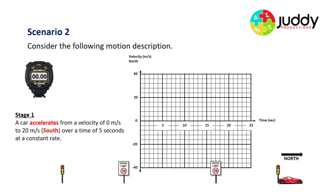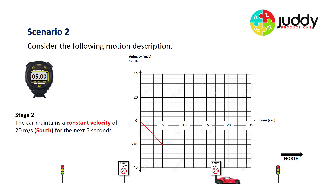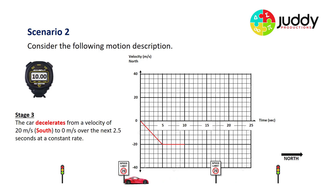Scenario two. Again we have a visual of continual motion, broken into sections for analysis. Stage one: the car accelerates from a velocity of zero to 20 meters per second south over five seconds at a constant rate — off it goes in the southerly direction, speeding up as shown by the red line. Stage two: the car maintains a constant velocity of 20 meters per second south for the next five seconds — a straight line at negative 20 meters per second north reference. Stage three: the car decelerates from 20 meters per second south to zero over the next 2.5 seconds at a constant rate.